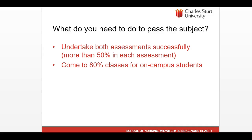The question I get from students most commonly is: what do I need to do to pass the subject? You need to undertake both assessments successfully, which means getting more than 50% in each assessment. If you're an on-campus student, you need to come to more than 80% of classes to meet the terms for the subject. Research from Charles Sturt and many other universities demonstrates that students who attend class regularly are more likely to pass.